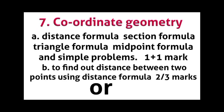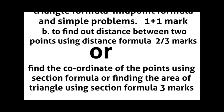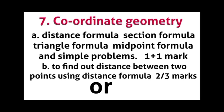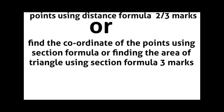In Coordinate Geometry: distance formula, section formula, triangle area formula, midpoint formula and simple problems carry one mark each — two questions of one mark. Finding the distance between two points using the distance formula carries two or three marks, or finding coordinates using the section formula or finding the area of a triangle carries three marks. Total five marks from coordinate geometry.